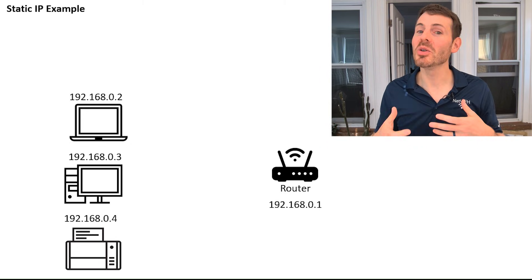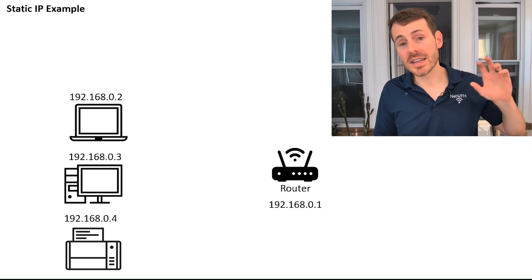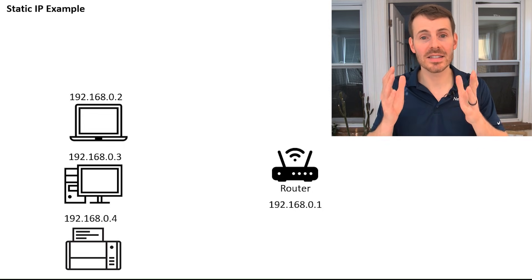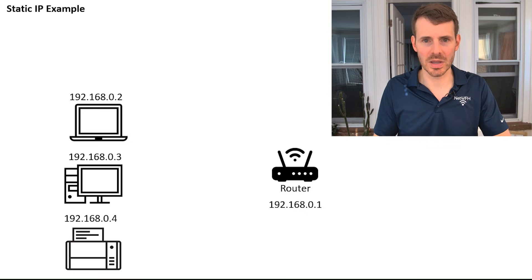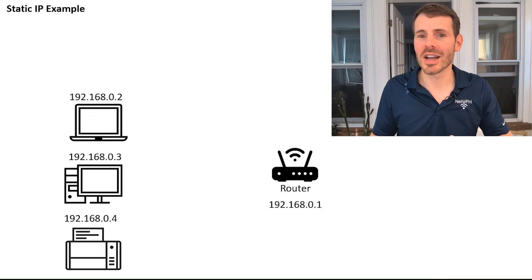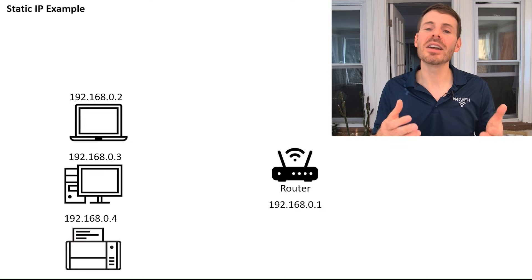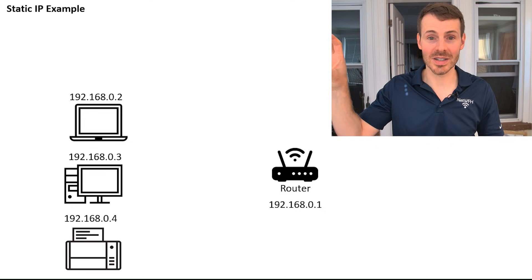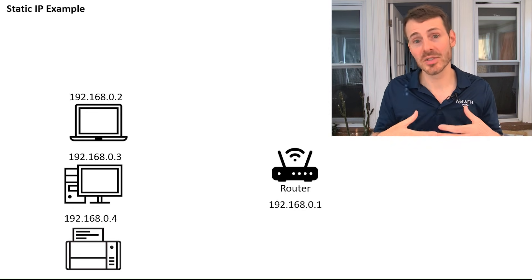In some situations, however, you might want your device's IP address to always remain the same — even if it disconnects from the network and later reconnects, you still want it to have that same IP address so other devices always know where to find it. This is the case with websites. Could you imagine if the IP address of websites constantly changed? It would be nearly impossible to find your favorite websites, and that's why websites use static IP addresses.